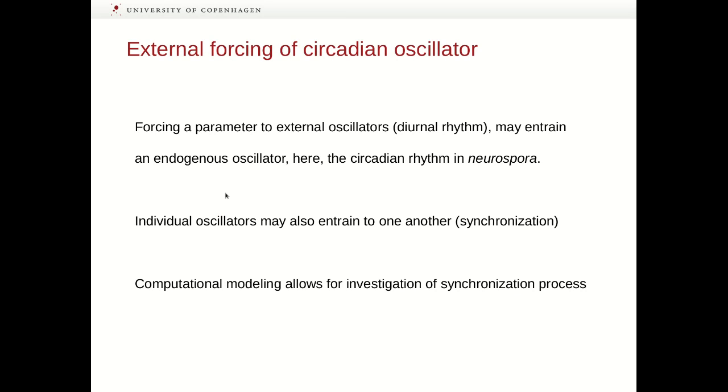In summary, we have shown that by forcing a parameter to an external oscillator, in this case the diurnal rhythm, we may entrain the intrinsic oscillator, in this case the circadian rhythm in Neurospora. However, if you had two individual oscillators, they may also entrain to one another. And this process we call synchronization. And this is what is occurring when the master clock is synchronizing all the peripheral clocks in our body.